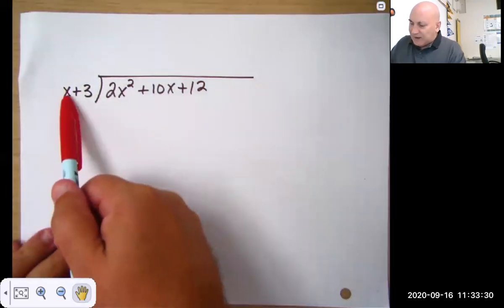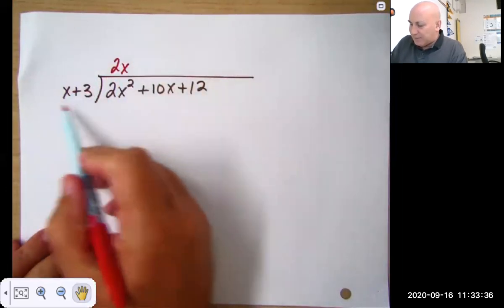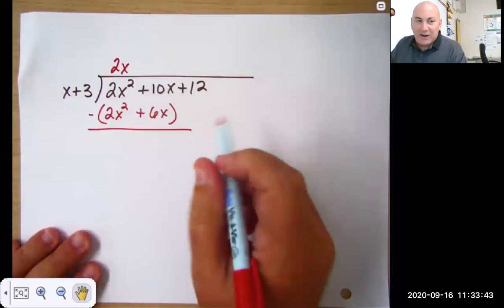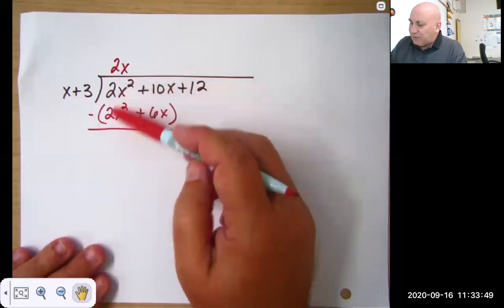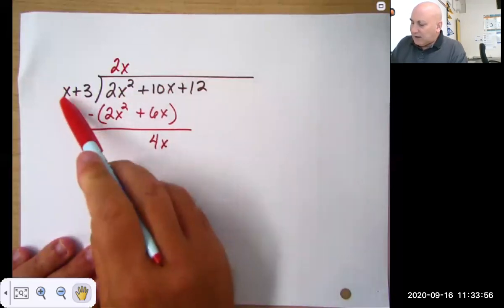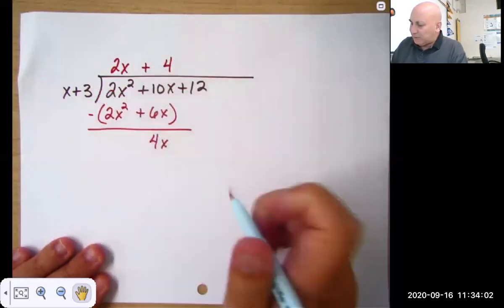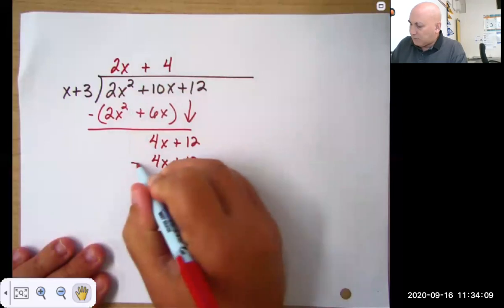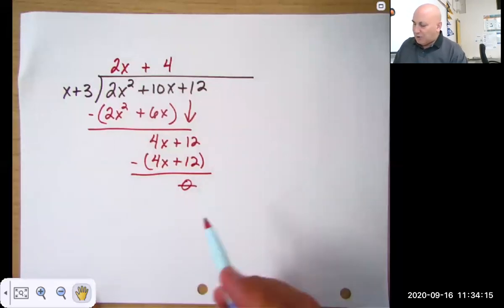So how many times does x go into 2x squared? It goes 2x times. Then we would take this, multiply it by this. And I insist that you put parentheses around that. So when you subtract, otherwise you're going to add these two numbers. These first two terms should always cancel. And you have 10x minus 6x is 4x. x goes into 4x four times. Four times x plus 3 is 4x plus 12. Oh, I forgot to bring down the plus 12. 4x minus 4x is 0, 12 minus 12 is 0. So there's no remainder.